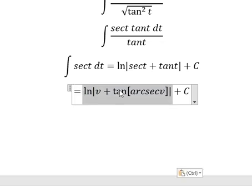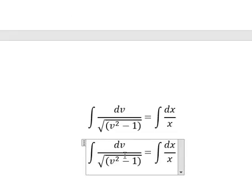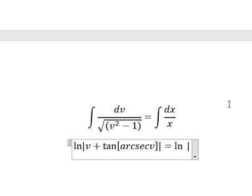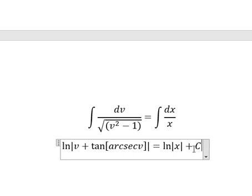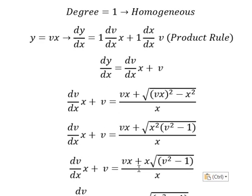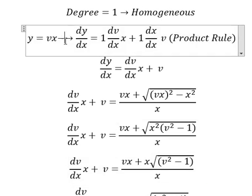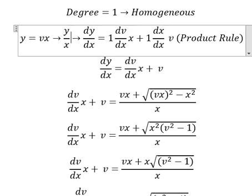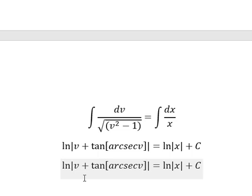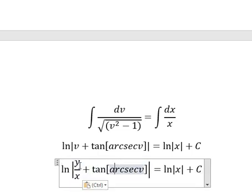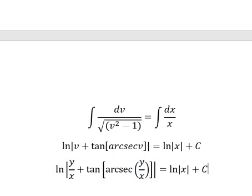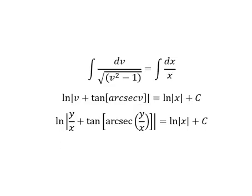This one we have ln of the absolute value of x, and I will put about C. About v, that is this one, so we divide both sides by x. And now I will put this one to change for v. This is the end, thank you for watching.